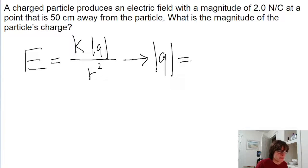So we find that the magnitude of the charge is equal to the square of the distance multiplied by the magnitude of the field divided by the Coulomb constant. So let's just plug in the numbers we have.